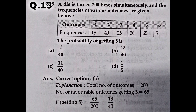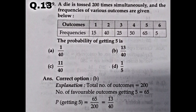Moving to question number 13. A die is tossed 200 times and the frequency of various outcomes: 1 appeared 15 times, 2 appeared 40 times, 3 appeared 25 times, 4 appeared 50 times, 5 appeared 65 times, and 6 appeared 5 times. What is the probability of getting 5? Favorable events = 65, total attempts = 200. Probability = 65/200, which simplifies to 13/40, which is option B.